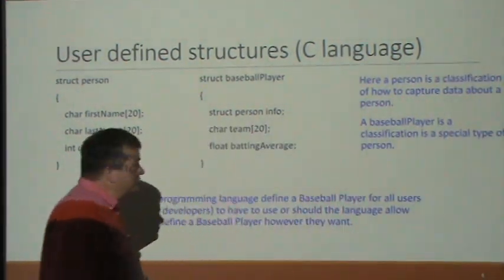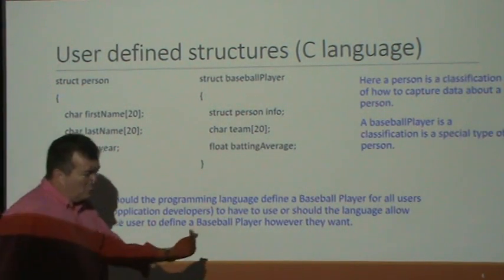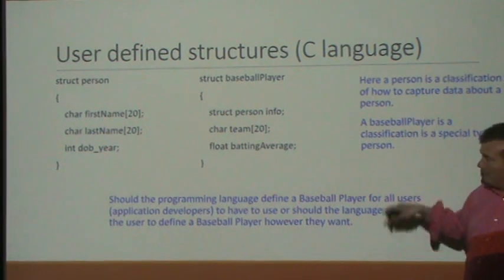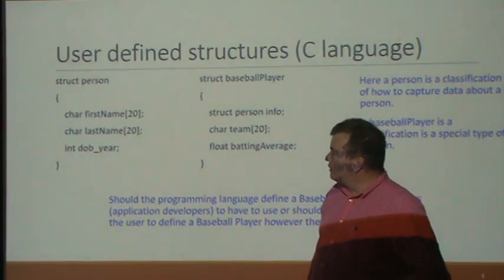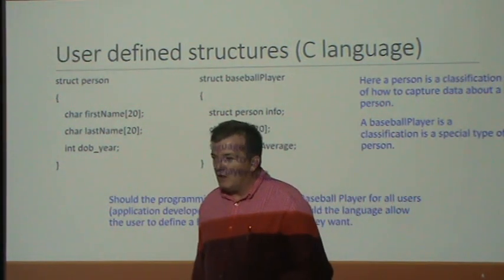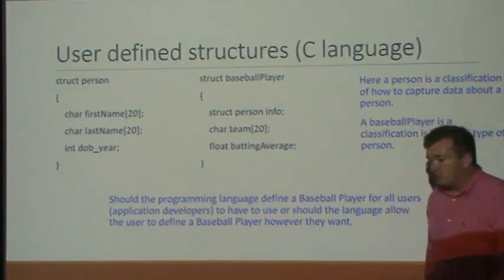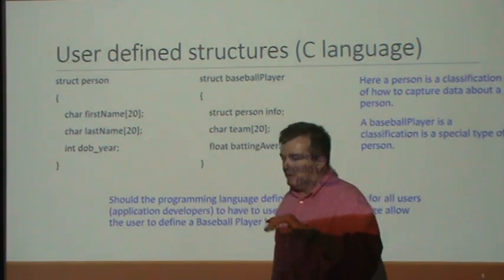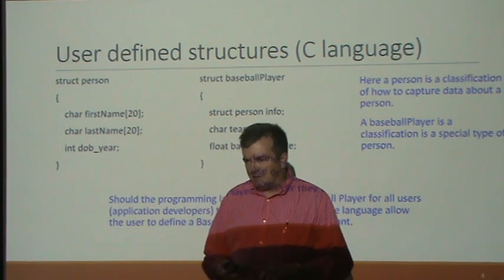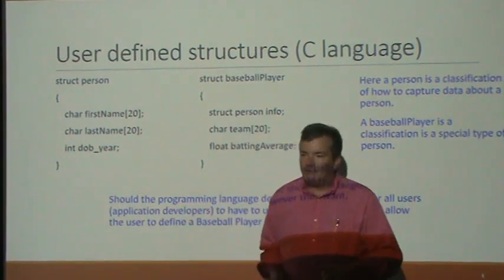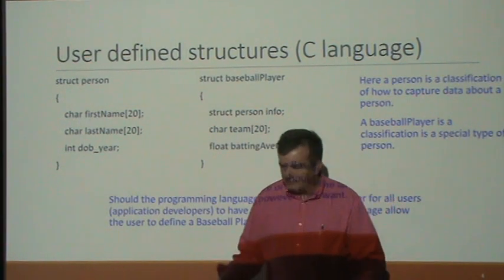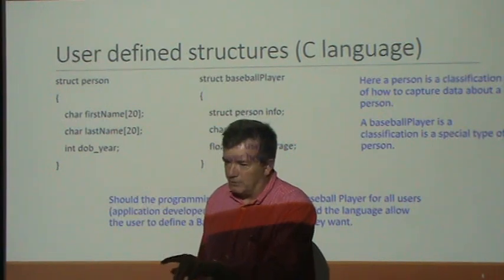We're going to go back in time to the C programming language. Suppose you have an application and you want to define a person. If you went on Facebook to create an account, it asks for first name, last name, email, password, gender, date of birth. If you went on LinkedIn, they have a different definition — how many years you've worked somewhere, can they have a copy of your resume. How they define a person differs from application to application.